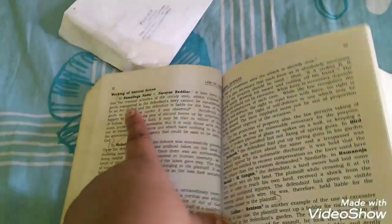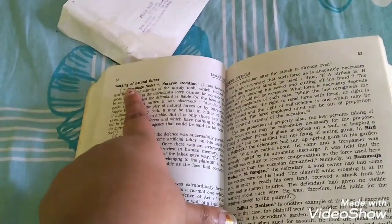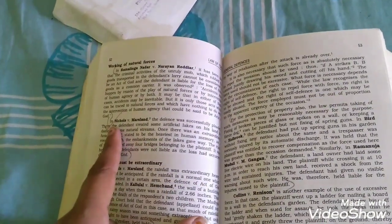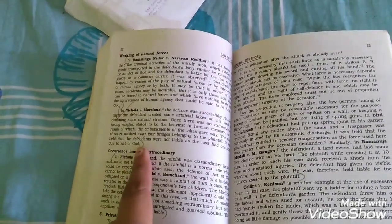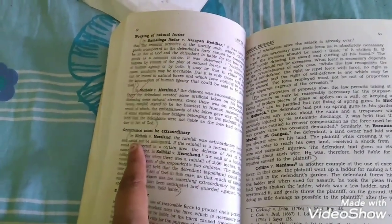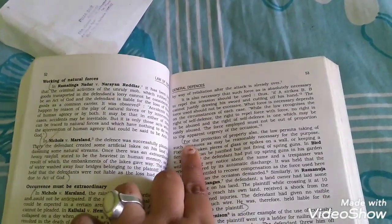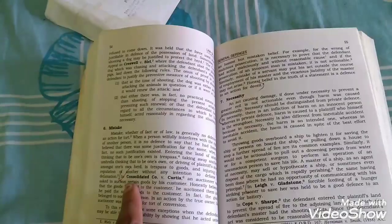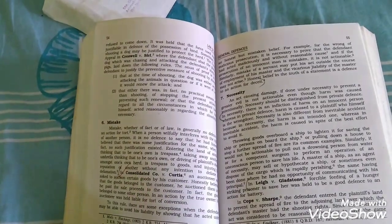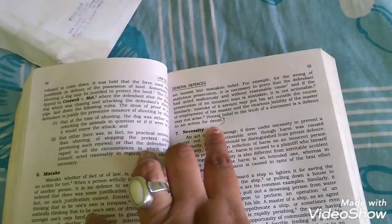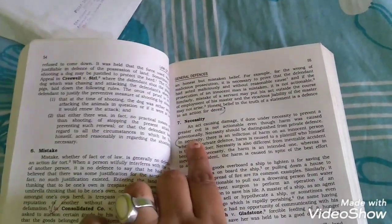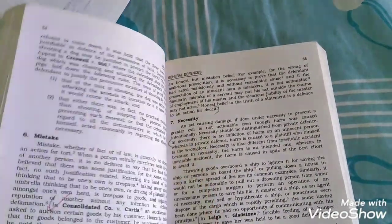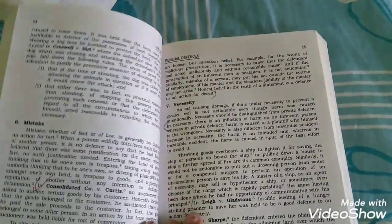Come to page number 52. From working of natural forces, read from there to Act of God in Nicholas versus Marshland. From the Act of God in Nicholas versus Marshland, from there to health libel. Then in the next page, for the protection of property, from there to the plaintiff. Come to next page, Consolidated Company versus Curtis. From there to action for desert.